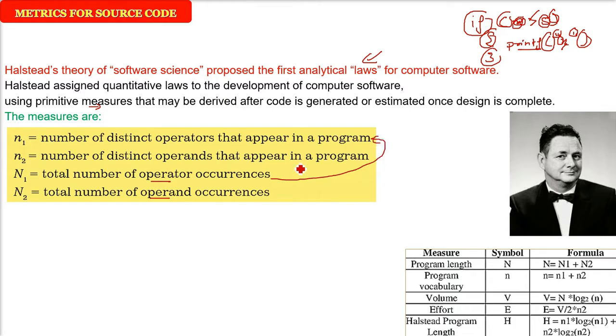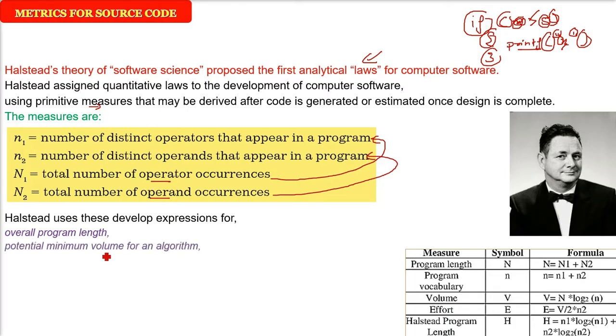This will be N1, number of operators; N2, capital N2. Now write them and remove the duplicates, just count one if there's multiplicity, and that will reduce to n1. n1 is the number of distinct operators; n2 is the number of distinct operands that appear in a program.